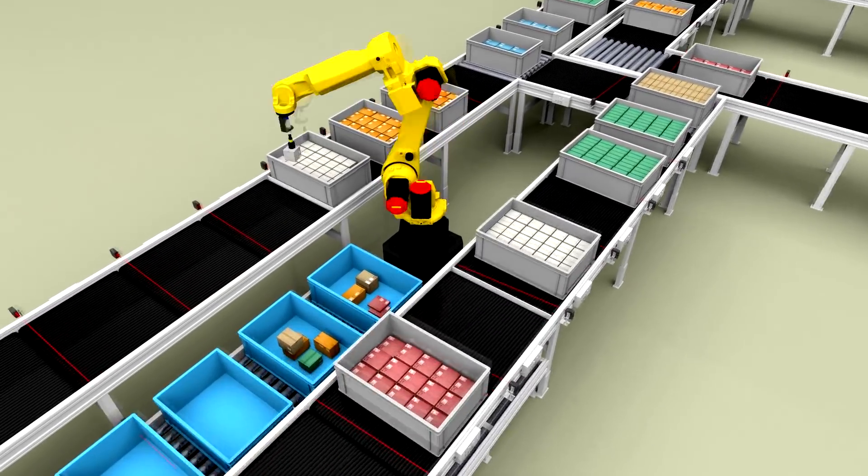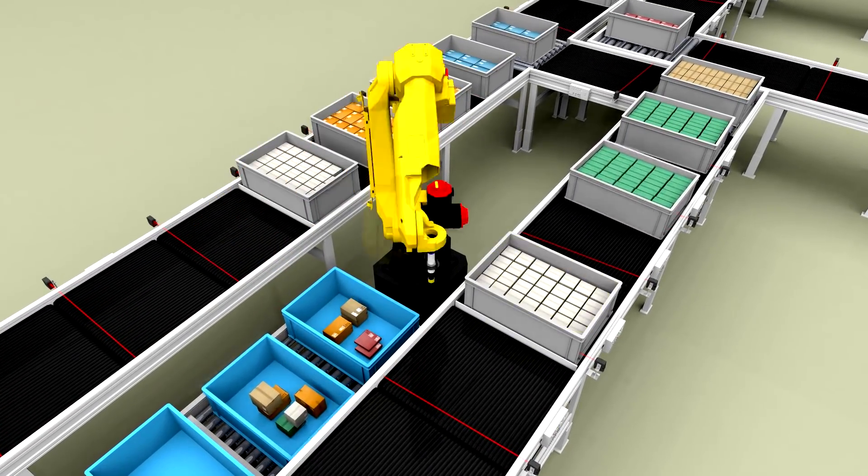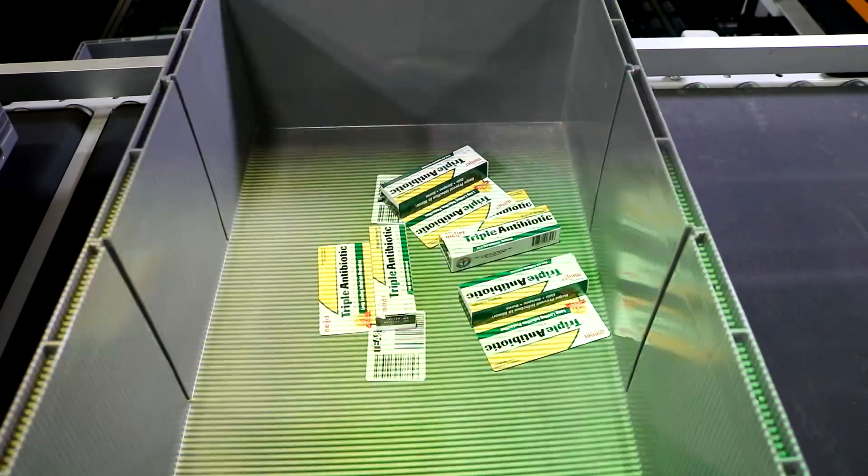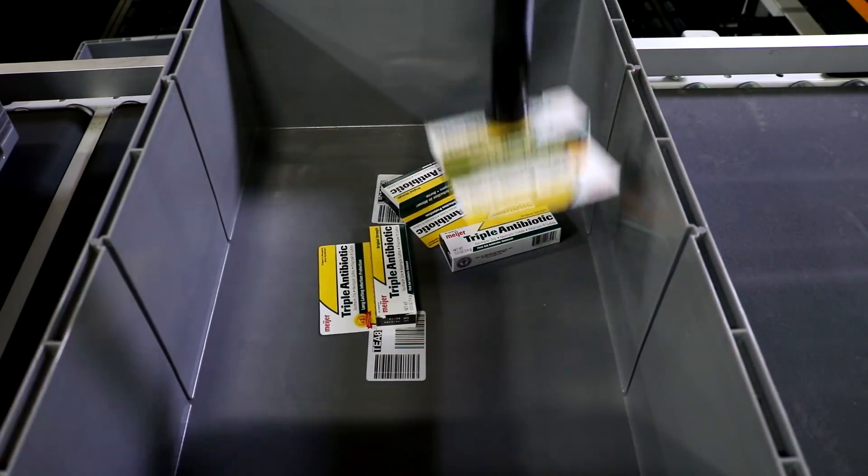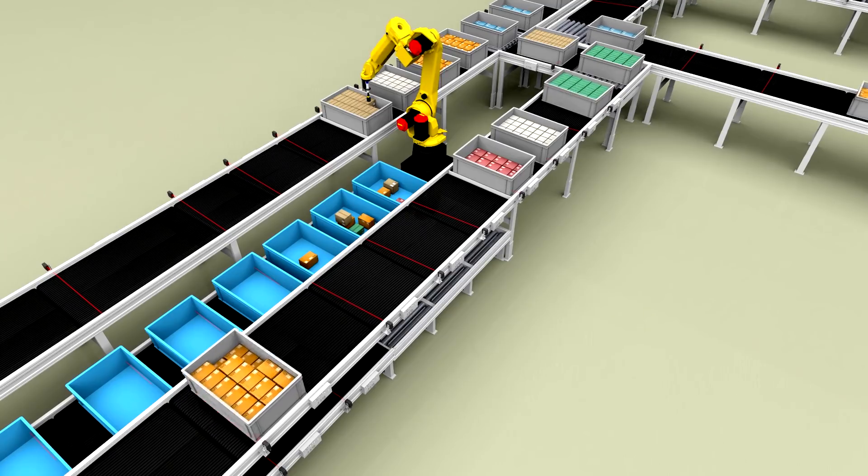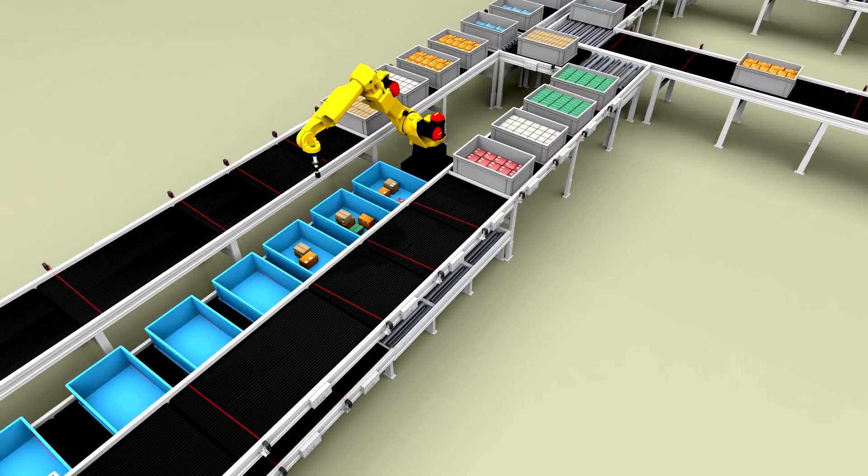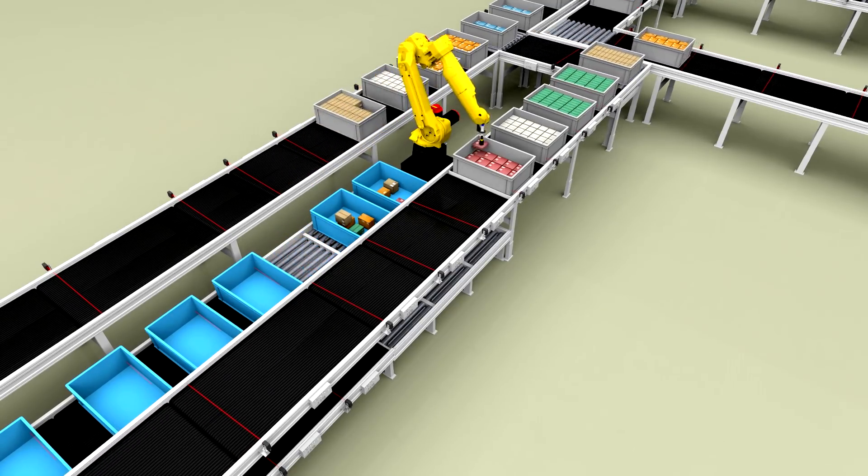The overhead vision system captures an image of the items inside the inventory tote. The robot picks the item and places it into the order tote. A continuous flow of inventory totes supports high order picking rates.